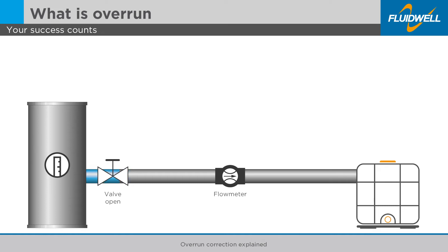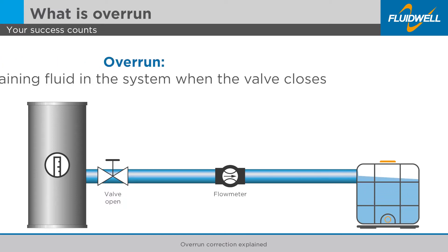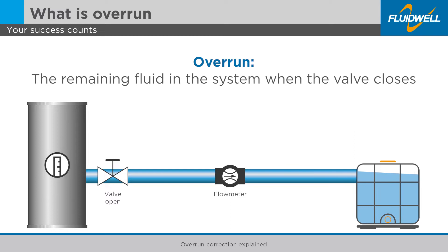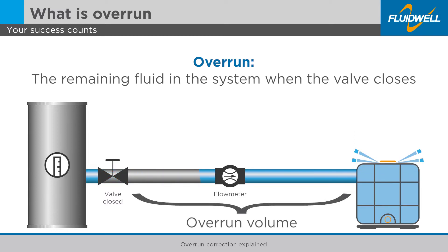An overrun may occur in a batch control process when the batch ends and the control output deactivates the pump or valve. The remaining fluid in the system that has already passed will be added to the batch, causing an inaccurate batch volume.